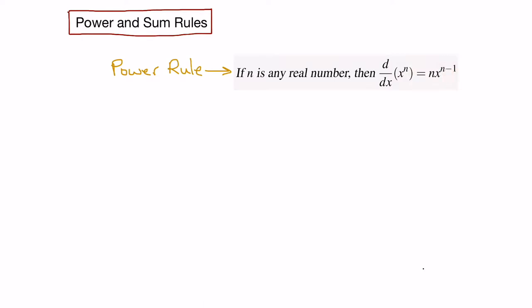To clarify, there really is a 1 as the exponent here. So the derivative is n times 1, which is n, and then we subtract 1 from the exponent n.